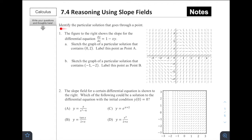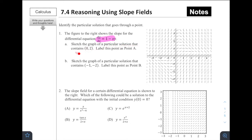We're going to jump right in. This type of problem is asking us to identify the particular solution that goes through a point. So we're trying to figure out, if they give us a slope field, what sort of reasoning can we do? For number one, the figure shows the slope field for dy/dx = 1 - xy. Sketch the graph of a particular solution that contains (0, 2) and label this point as point A. So first off, let's go to (0, 2) — right here — and label that as point A.